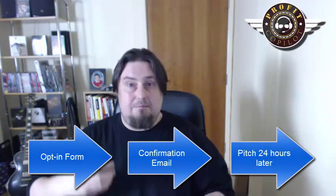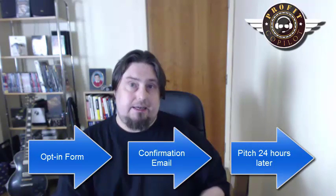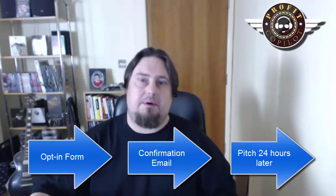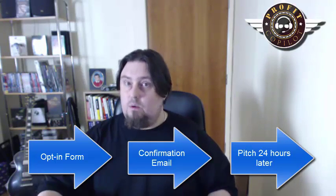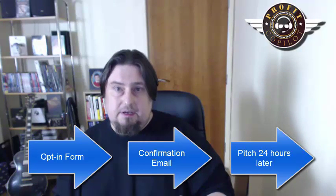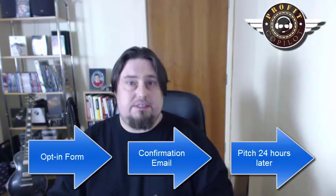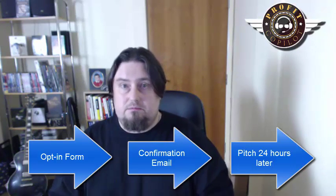Usually what I recommend my newbie students do is have the sequence like this: the subscriber opts in and then immediately clicks a confirmation link, which takes them to the lead magnet — the ethical bribe. Then one day later, they receive a value-packed email that also contains a pitch for a product, a recommendation of a premium option. I recommend that as a good way to start learning the ropes. But that's only one option we have.